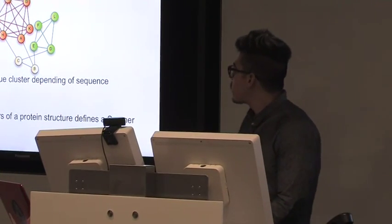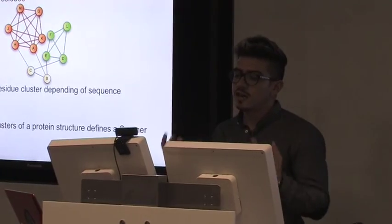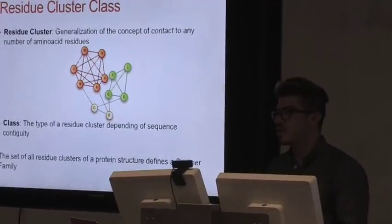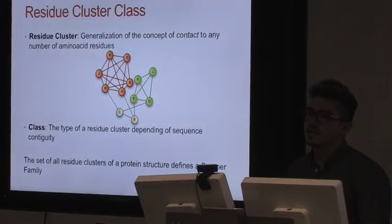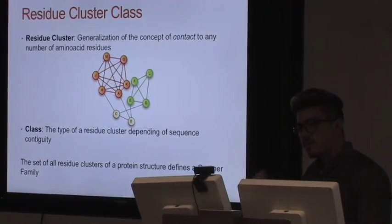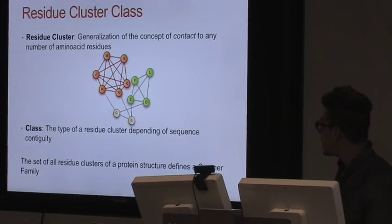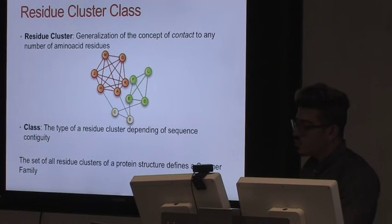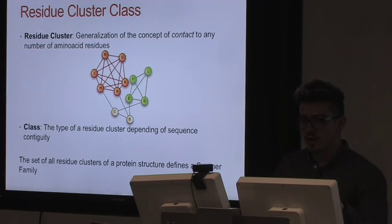And a residue cluster is like a generalization of this concept. So you can have more than two residues in contact if all of them are in contact with each other. For example, here we have three clusters. That is equivalent to cliques, maximal cliques that are complete subgraphs of the contact map.